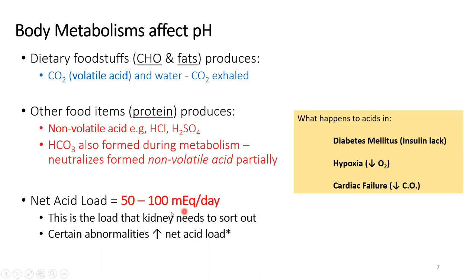In hypoxia, there is a lack of oxygen, so the tissues switch from aerobic to anaerobic respiration. Anaerobic respiration produces fixed organic acids such as lactic acid, which cannot be exhaled and add to the net acid load. You may be familiar with vigorous exercise causing muscle pain or cramps — these are due to accumulation of lactic acid in the muscles, which is an acid that needs to be sorted out.